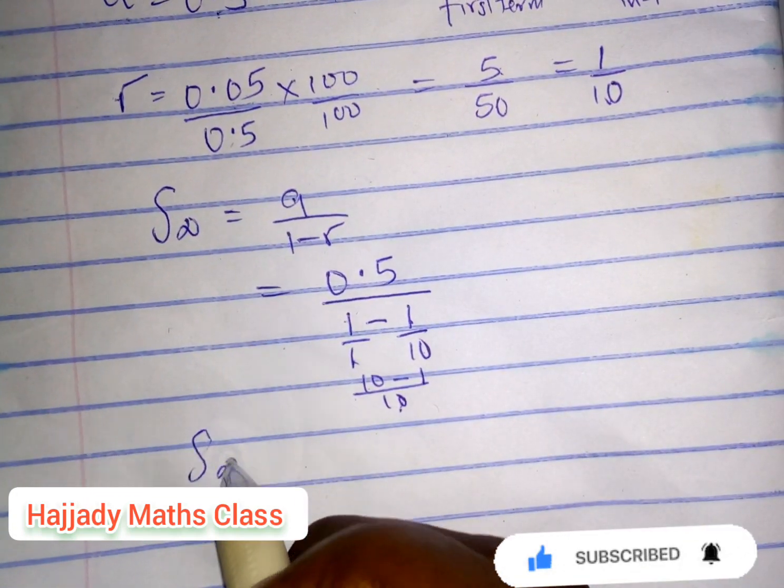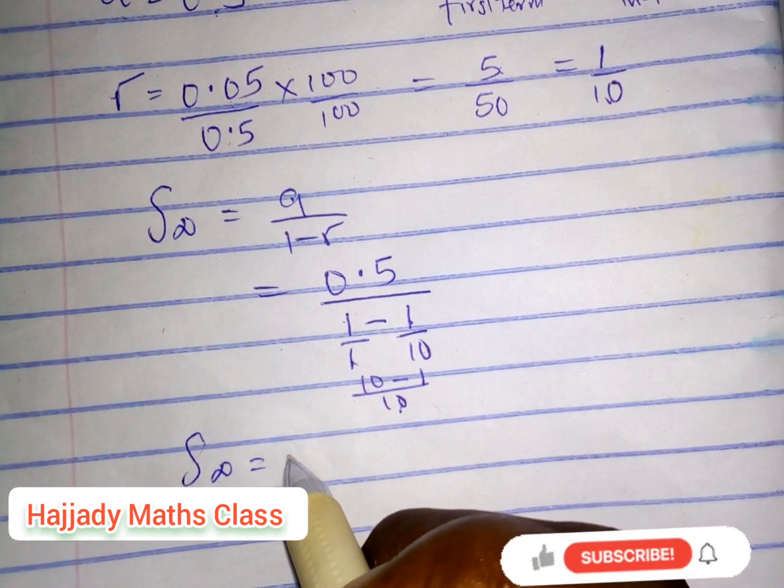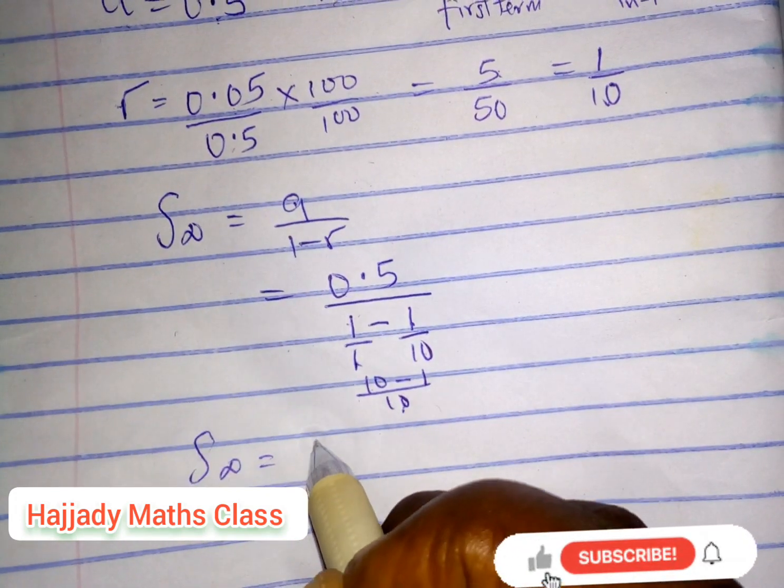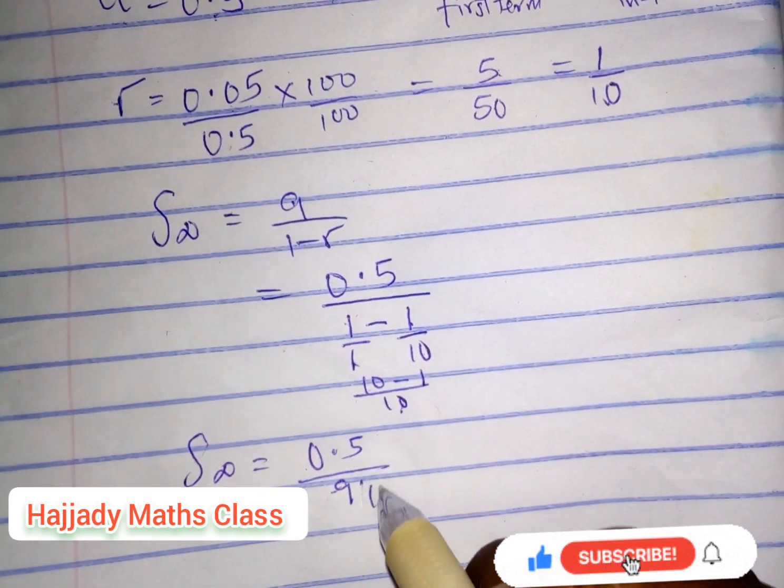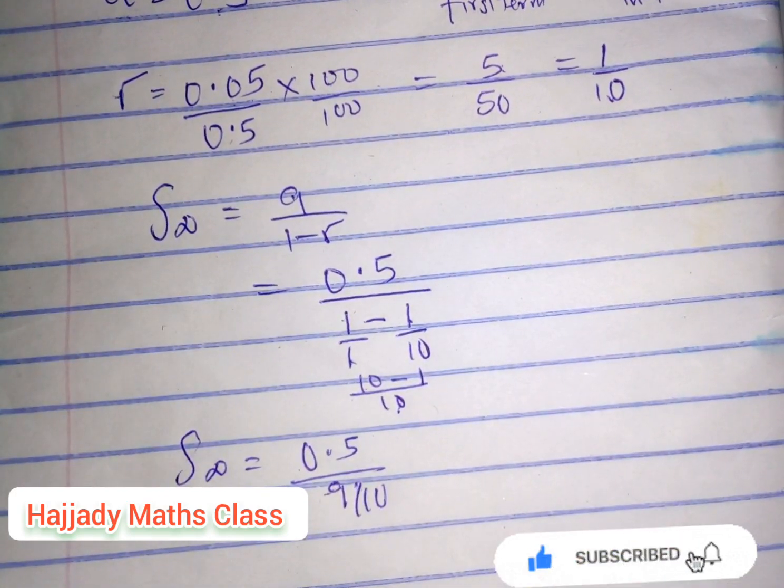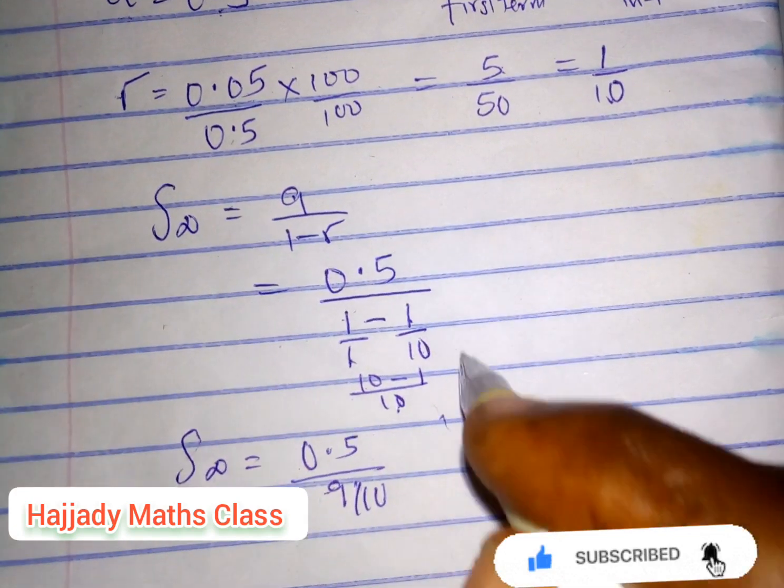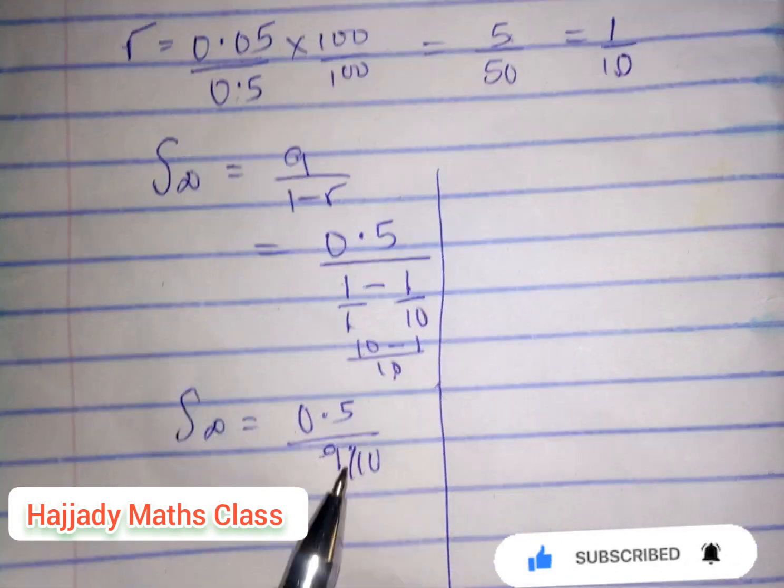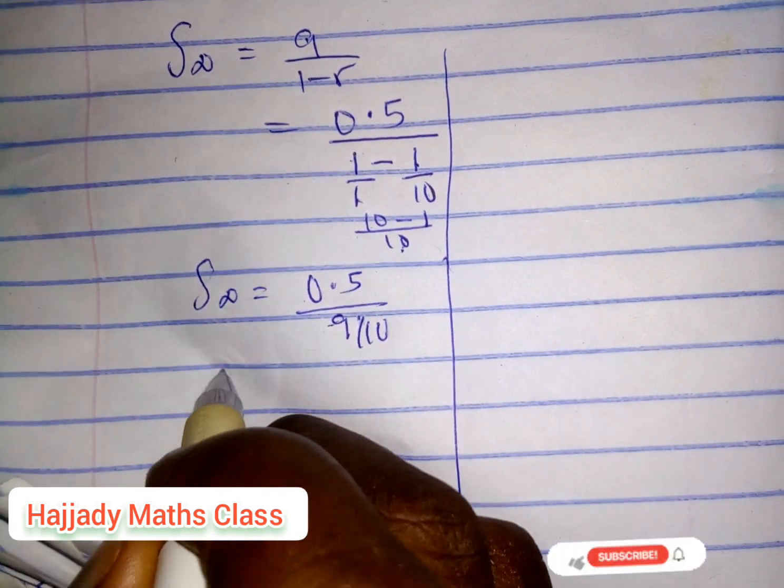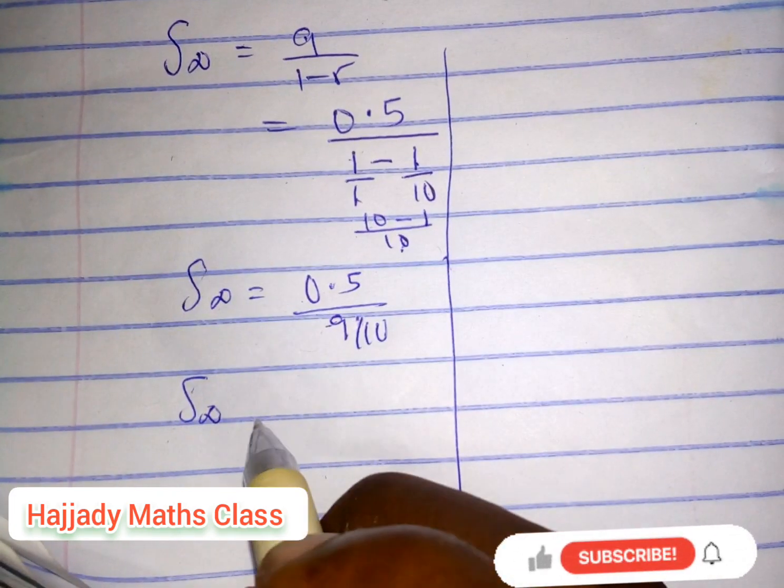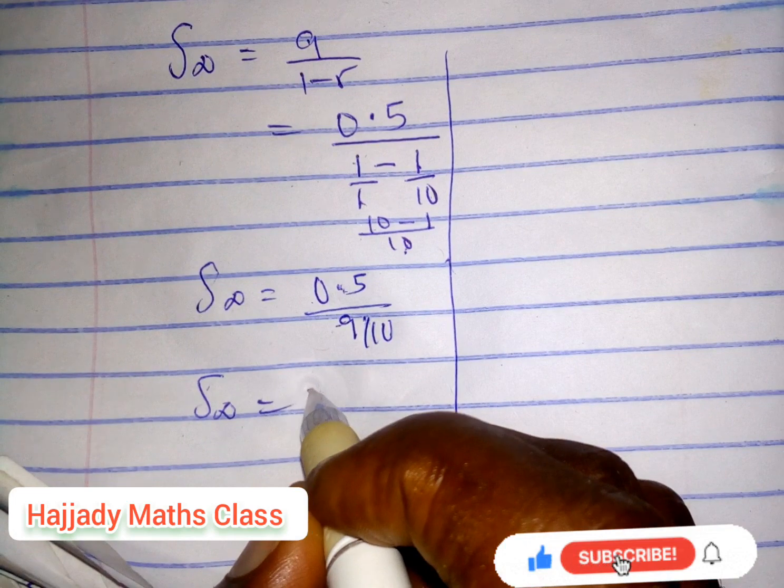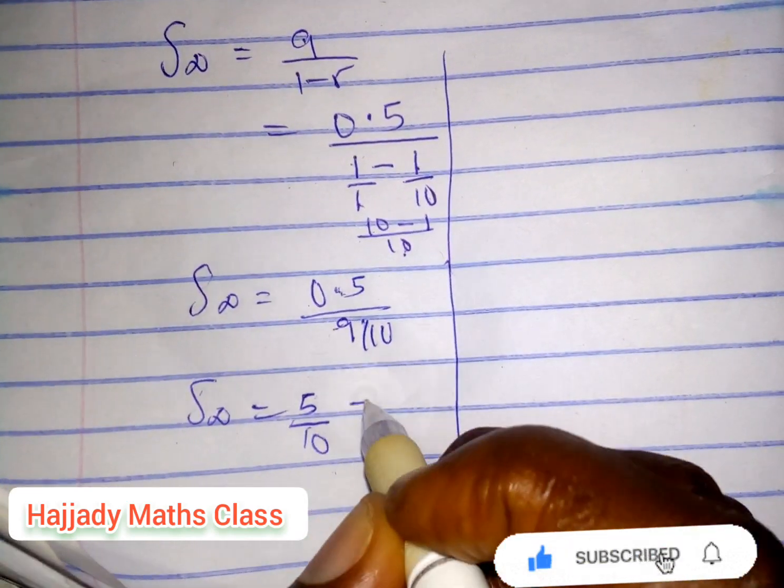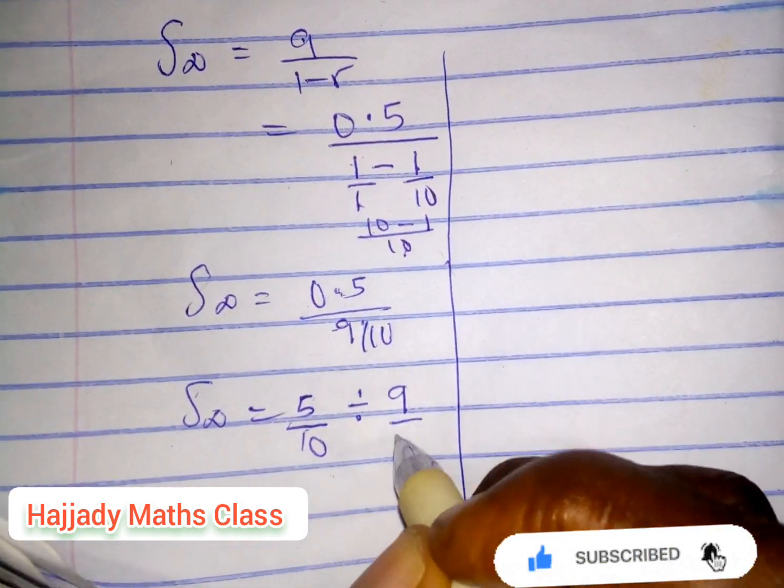divided by 9 over 10. Our sum to infinity is equivalent to 5 over 10 divided by 9 over 10, which is the denominator. Our sum to infinity will be 5 over 10.